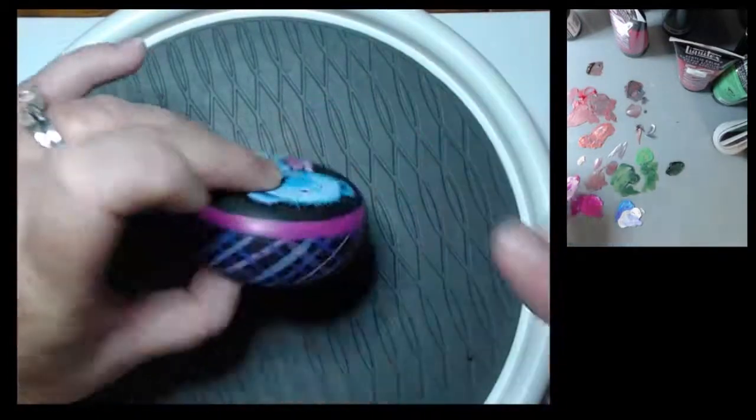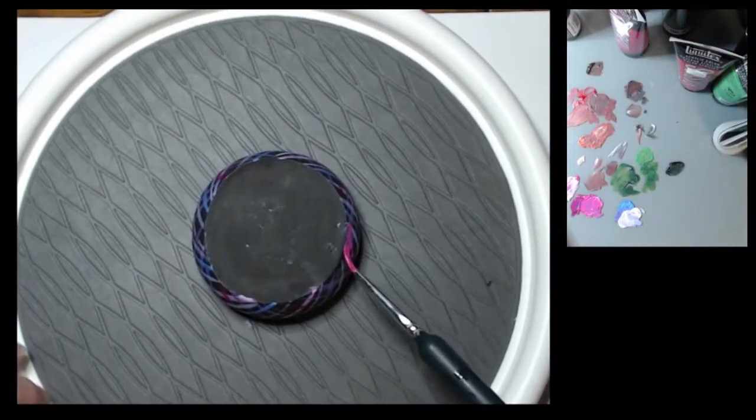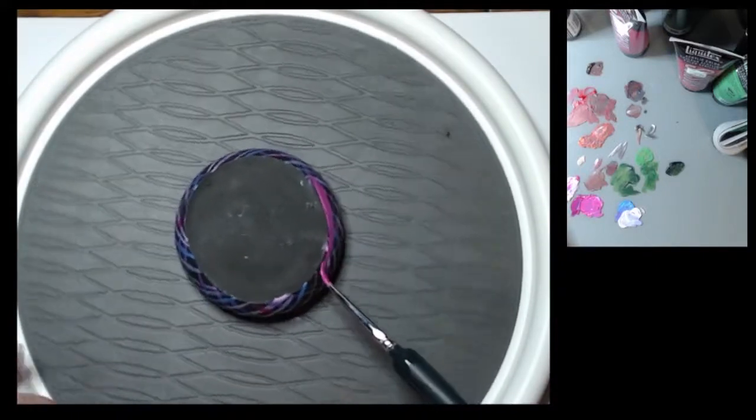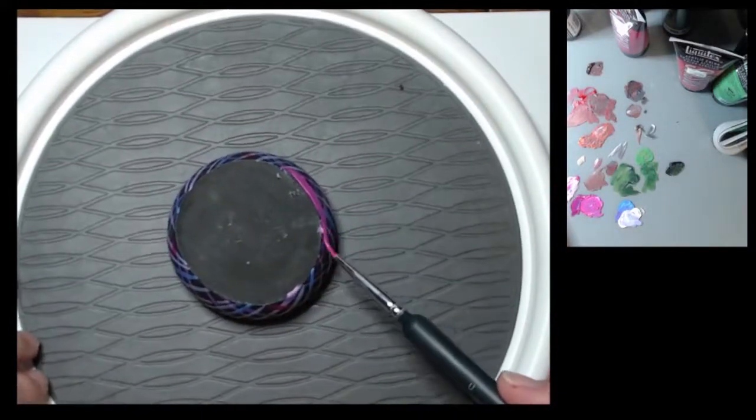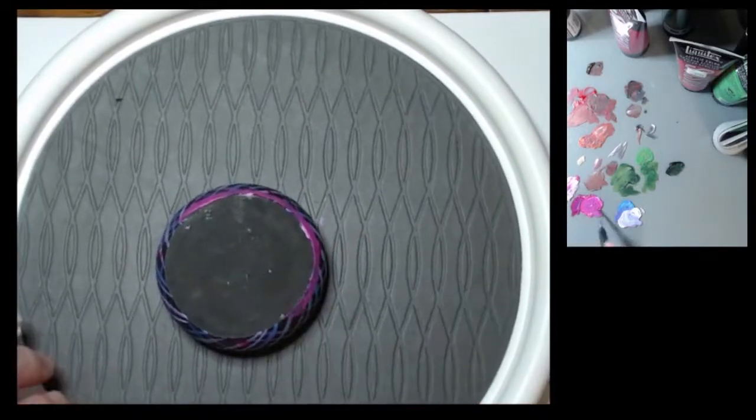Now I'm going to flip it over and I'm going to do the bottom stripe. Now the bottom is a lot harder because of the way the mold formed. This isn't perfectly round where the top is, the bottom isn't.